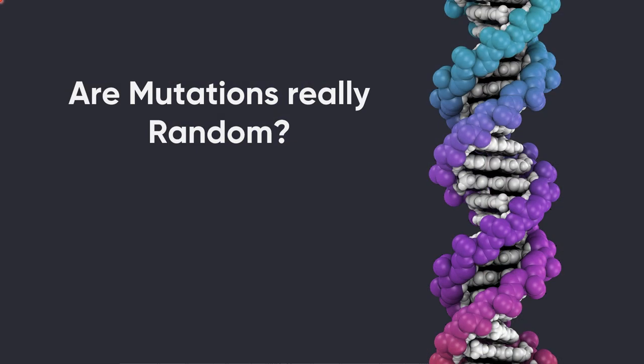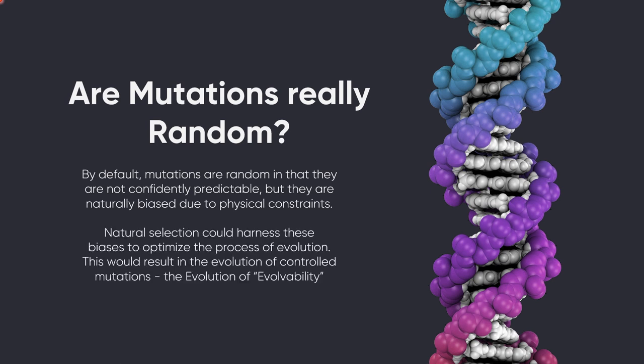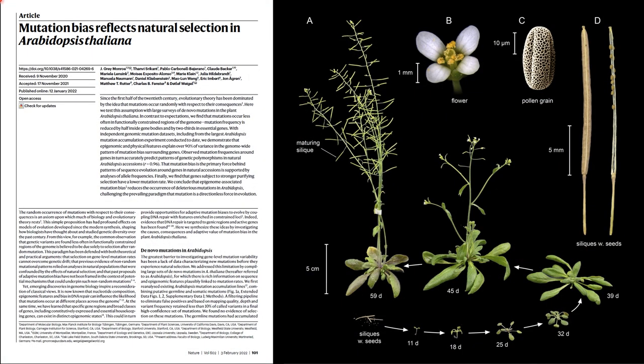Today I just want to recap what we've learned. So, are mutations really random? By default, mutations are random — they're random in that they're not confidently predictable — but they are naturally biased due to physical constraints. And because of these natural biases, natural selection could harness them to optimize the process of evolution. This would result in the evolution of controlled mutations, the evolution of evolvability. Make sure you're subscribed, because next week we're going to look at that new paper and see whether evolvability has actually evolved within the plant Arabidopsis thaliana.